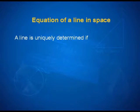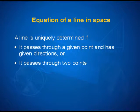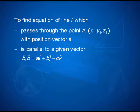A line is uniquely determined if it passes through a given point and has a given direction, or if it passes through two points. Starting with our first possibility, we find the equation of a line which passes through point A with given coordinates — or in vector language, with position vector a. The second piece of information is a vector to which the line is parallel, taken as a·i-cap + b·j-cap + c·k-cap.